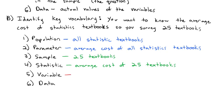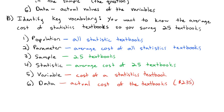Now, the variable, that's the information I'm gathering. The variable is when I look at each textbook, what am I recording? Or the question, what am I asking with the variable? I'm asking the cost of a statistics textbook. And the data is the answer to that question, or the actual values of the variables. So it's the actual cost of the textbooks. An example might be, you find an expensive one for $235. That is a piece of data to the variable, an answer to the question.